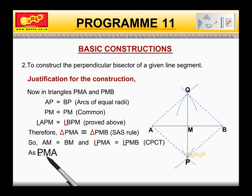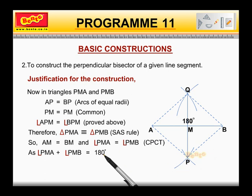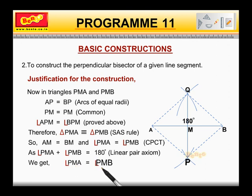As angle PMA plus angle PMB is equal to 180 degrees, that is, linear pair axiom. We get angle PMA is equal to angle PMB is equal to 90 degrees.